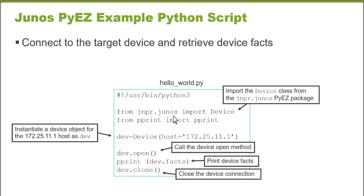This is an example Python script that connects to a Junos device, retrieves facts about the device, and prints them on the screen. Let's look at some of the components. Starting with the import statements — this is where we use the Python 'from' statement to import modules. The first line references the Junos PyEZ library. From jnpr.junos, we import a Device object, which represents a Junos device.